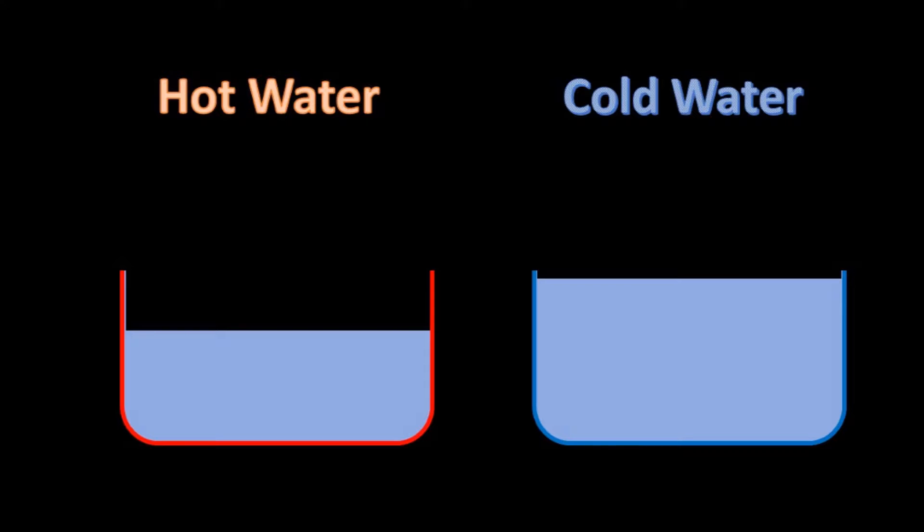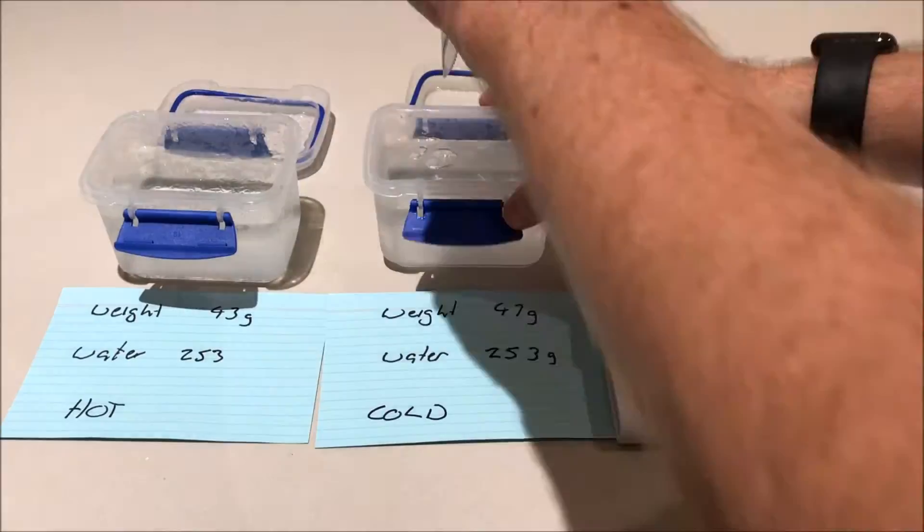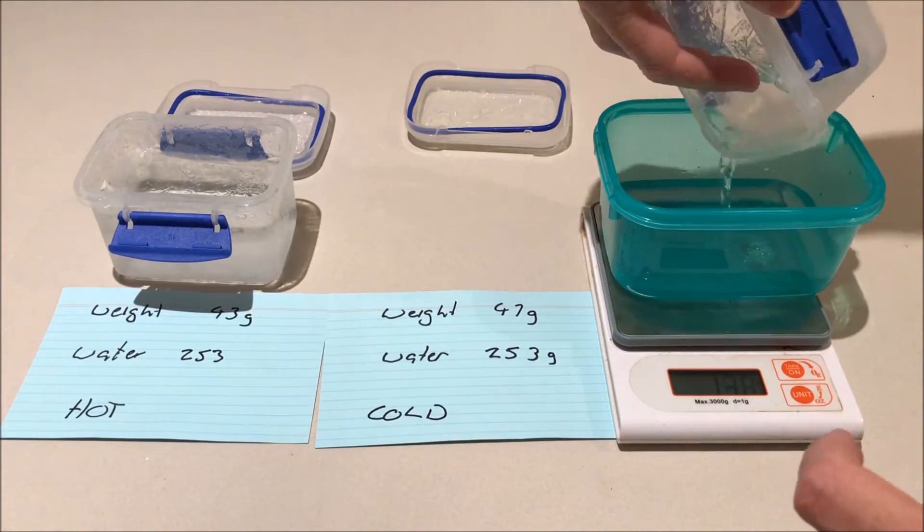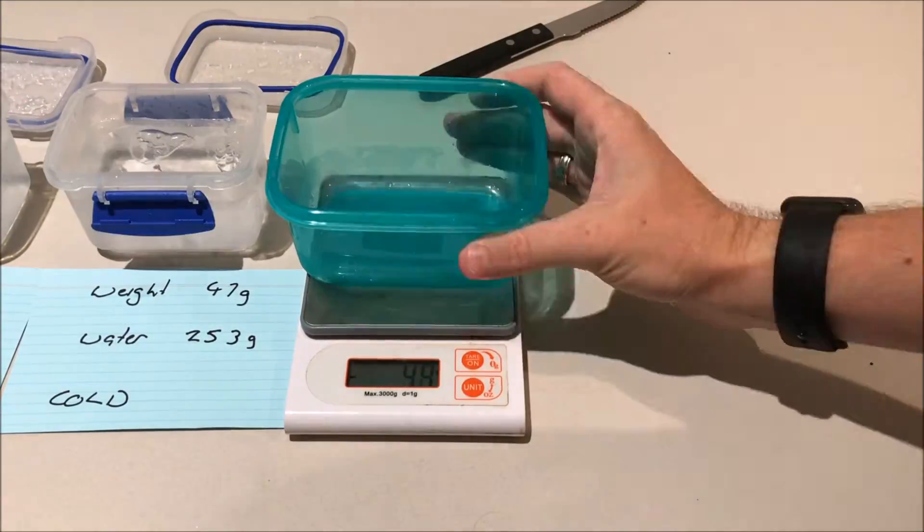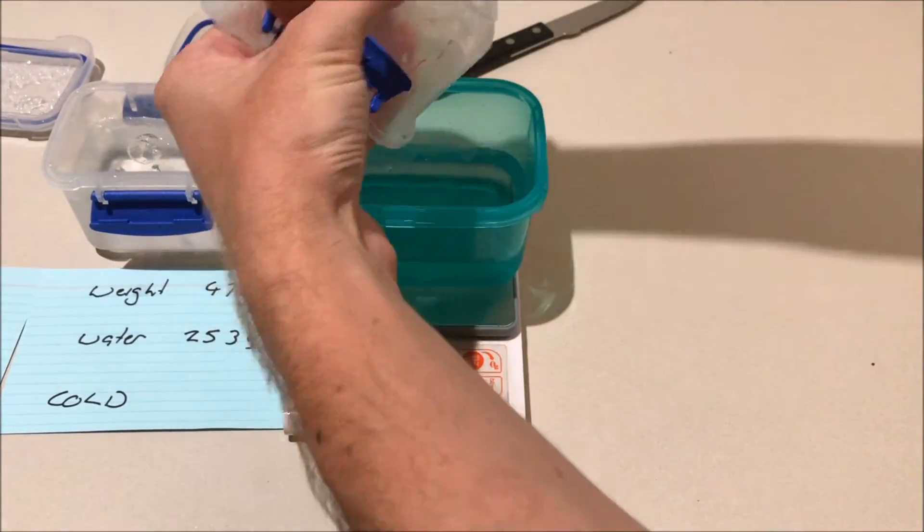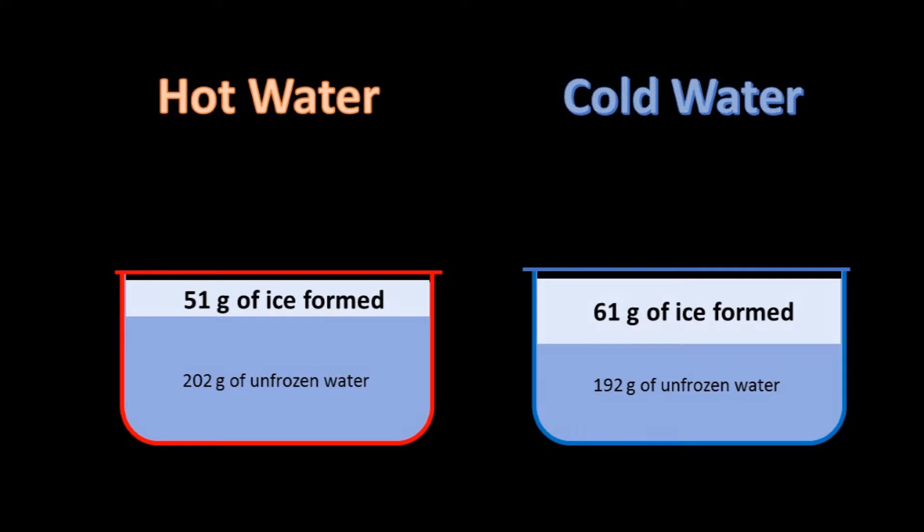Now if this hypothesis is correct, then we should expect that if we eliminate evaporation, then the effect would go away. To do this all you need to do is add a lid to the container. And now we see the hot water container has significantly more unfrozen content than the cold. So 202 grams compared to 192. The cold water container froze 61 grams of its water as opposed to 51 grams for the hot water.